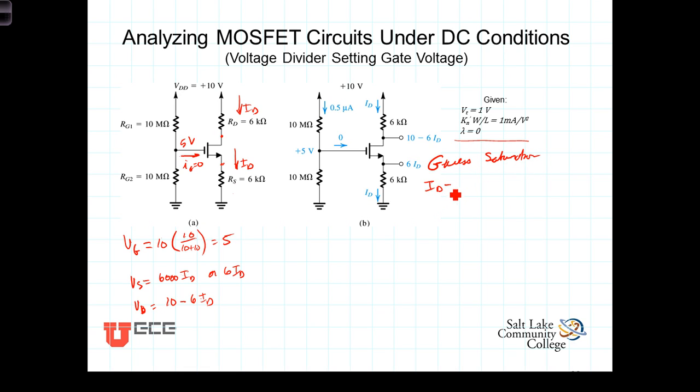Which means then that I_D equals one half K_N prime W over L times V_GS minus V_T quantity squared, which then is equal to one half. Now K_N prime W over L is given to us as 1 milliamp per volt squared. So this is already given in units of milliamps, kilohms and volts.